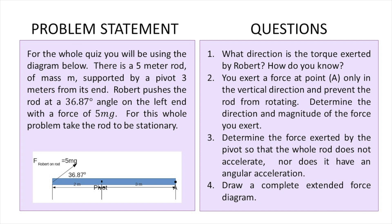Feel free to pause the video to copy the problem statement so you can follow along. The problem goes as follows: there is basically a diagram giving us a 5-meter rod supported by a pivot 3 meters from its end. Robert the Carpenter pushes the rod at a 36.87° angle on the left with a force of 5mg. For this whole problem, the rod is completely stationary, so we have to answer a bunch of questions.